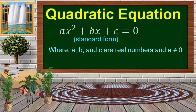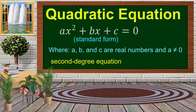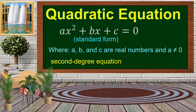In this case, we have the degree of 2. So a quadratic equation is a second degree equation, meaning the highest exponent is 2.